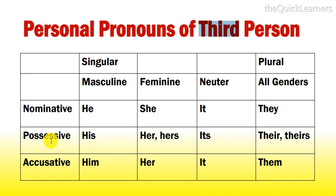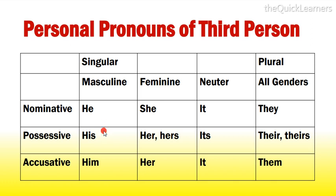He, she, it, and they are included in the nominative case. He is masculine, she is feminine, it is neuter, and they shows all genders. His, her, hers, its, their, and theirs are included in the possessive case — his is masculine, her and hers feminine, its is neuter, their and theirs shows all genders. Him, her, it, and them show accusative case — him is masculine, her is feminine, it is neuter, and them shows all genders.